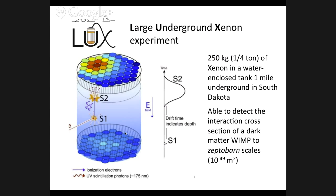If you're looking for dark matter you want to go to a dark place, so this experiment is a mile underground in a mine in South Dakota. They have a chamber with about 250 kilograms — a quarter ton — of xenon. Xenon is a noble gas, so the atoms don't interact with each other or form bonds, but they can interact freely with particles that pass through the chamber.